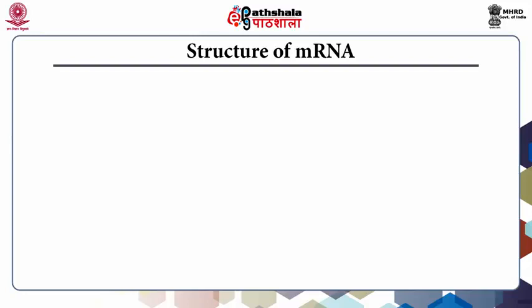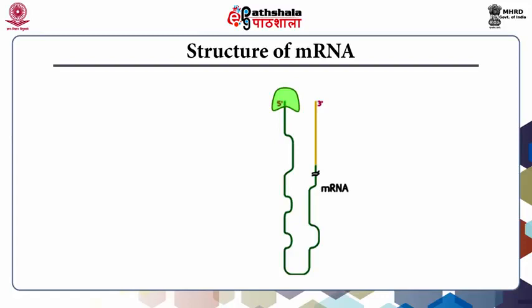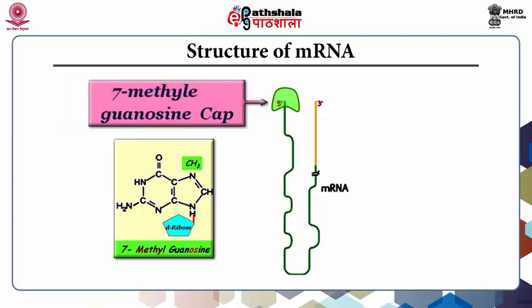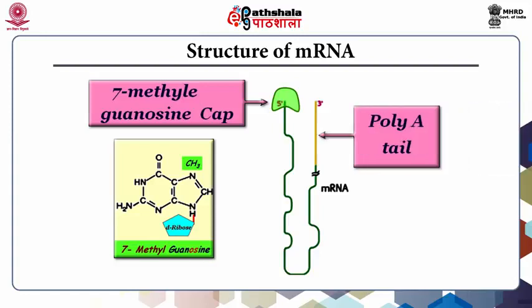The structure of mRNA is not very well defined; however, sometimes it acquires a hairpin-like structure. Certain structural features are essentially part of mRNA. As shown in this picture, there is a 7-methylguanosine cap on the 5-prime end — the green one. The structure of this 7-methylguanosine is a methylated guanosine. You will also see a poly-A tail, which means a number of adenosine residues at the 3-prime end of the mRNA. This shows the typical structure of mRNA.